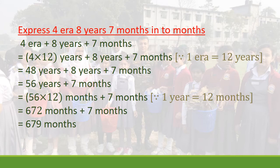So we multiply 56 by 12 months. Next line: 56 × 12 = 672 months, plus 7 months. Adding those together gives 679 months. This is the answer.